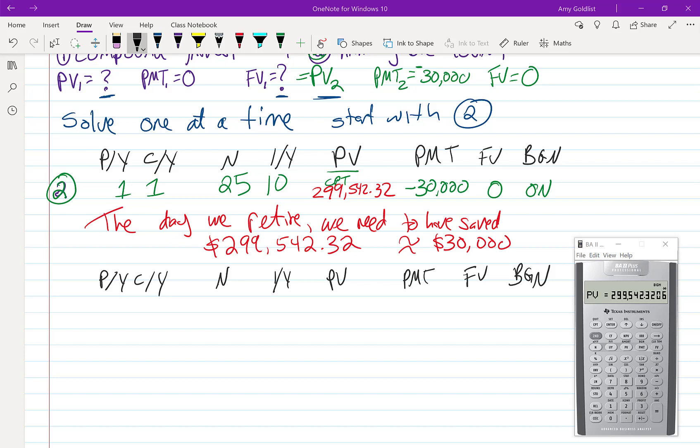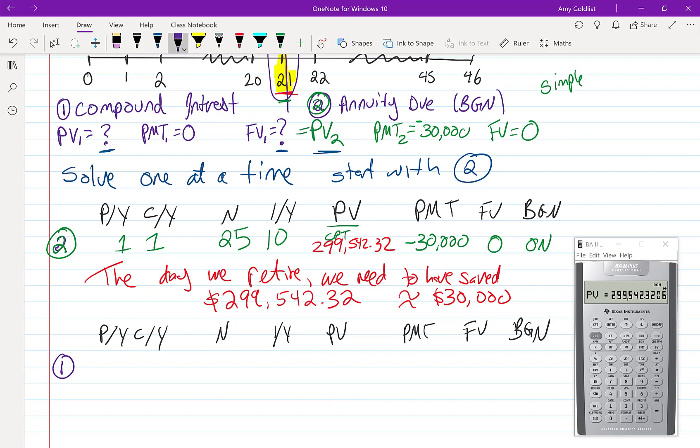So what we're going to do now is part one of our problem. So part one, let's just scroll up to look at that, is a compound interest problem where I'm trying to figure out how much money to put in. Zero payments. Begin doesn't matter. When the payment is $0, it doesn't matter if I put $0 in my account at the beginning or the end of the year. So I can just leave that alone. We know that N is 21. Future value is $299,000. The easiest way to do this is while it's showing up on my screen, I press that negative sign. And now I just press future value and it's stored in there. So let's go ahead and change everything.